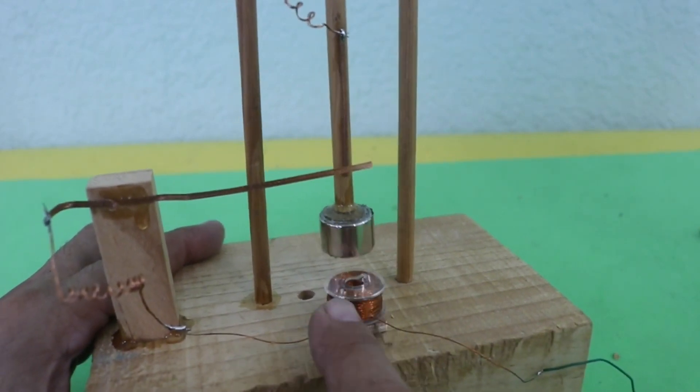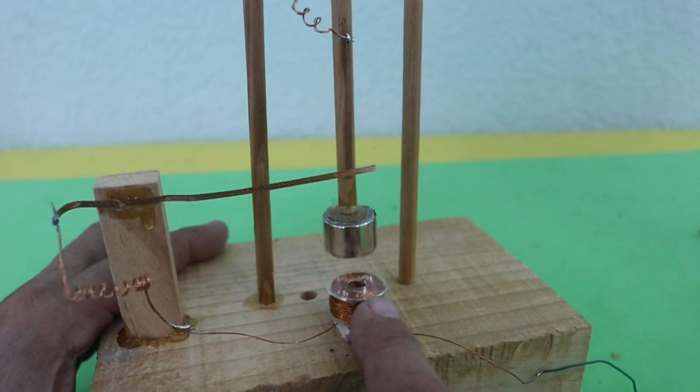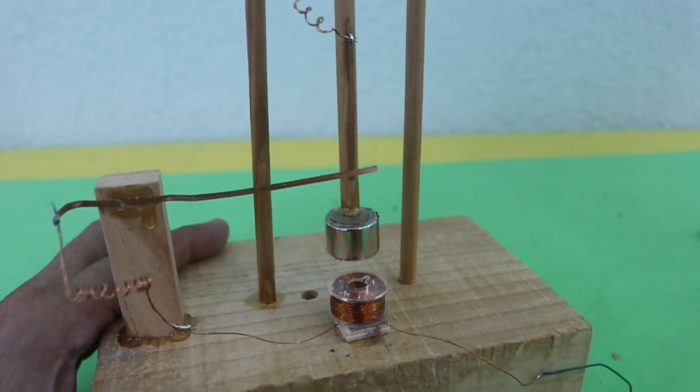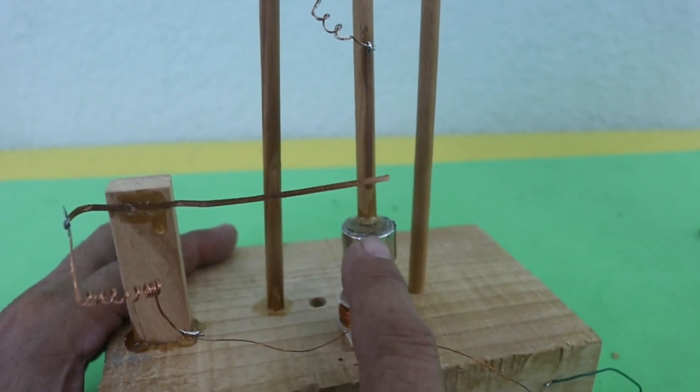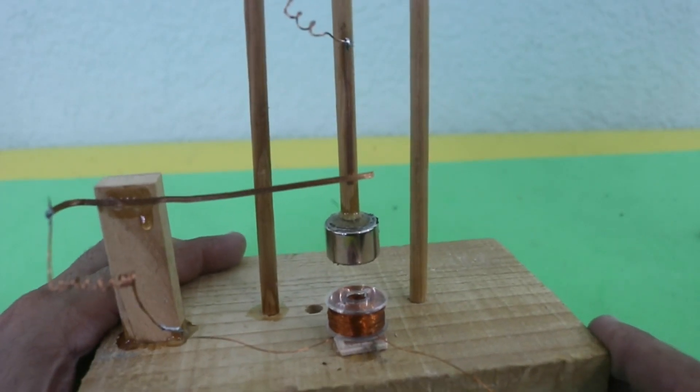Remember that a coil, when it is energized, behaves as a magnet so it can attract or repel the magnet in the pendulum.